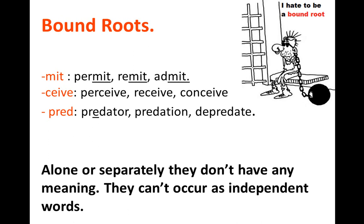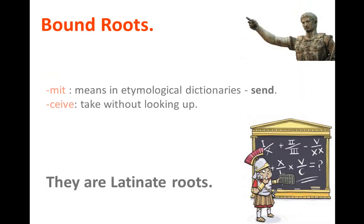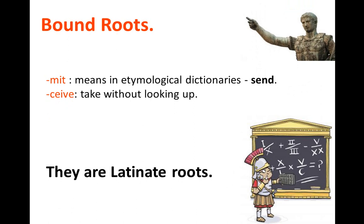Examples of bound roots: '-mit' appears in 'permit,' 'remit,' 'admit'; '-ceive' appears in 'perceive,' 'receive,' 'conceive'; '-pred' appears in 'predator,' 'predation,' 'depredate.' Alone, these pieces have no meaning — they cannot occur as independent words. Usually these bound roots are latinate: '-mit' means 'send' and '-ceive' relates to 'take' in etymological dictionaries.